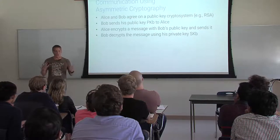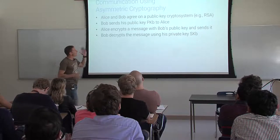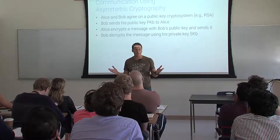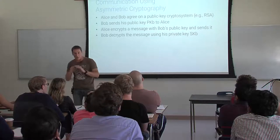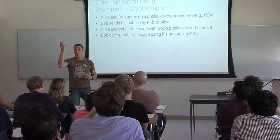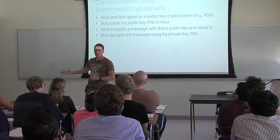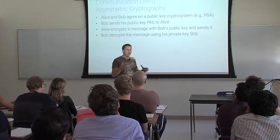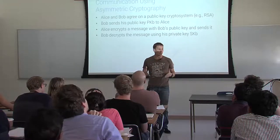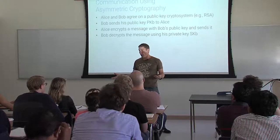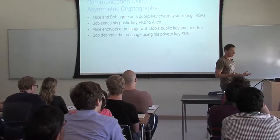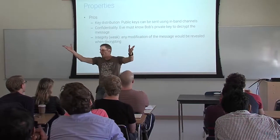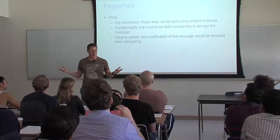Now Alice and Bob have to agree on the public cryptosystem they're going to use — for example, RSA. Bob sends his public key to Alice. The public key can be seen by anybody — it doesn't have to be shared in secret. This key can be sent on the internet for everybody to see; in fact, my public key is on my webpage. Alice encrypts a message with Bob's public key, and now that message can only be decrypted by Bob, because Bob is the only person who has both the public key and the secret key. With this, you solve the key distribution problem.